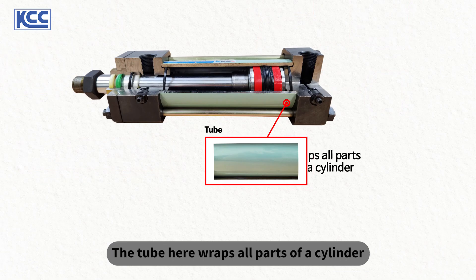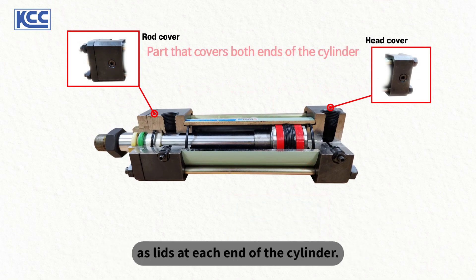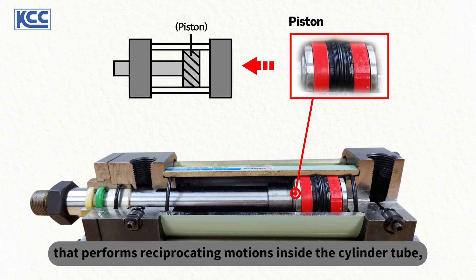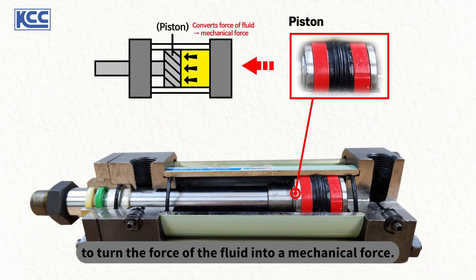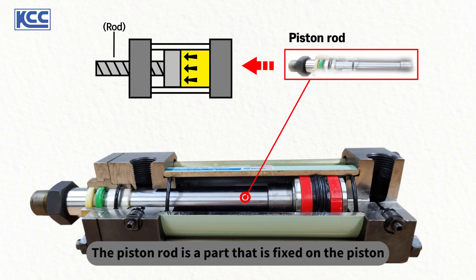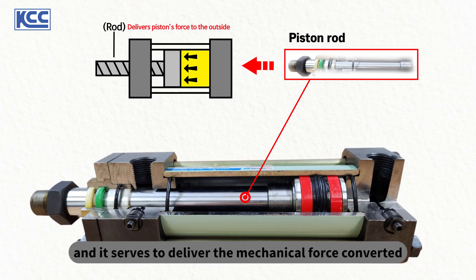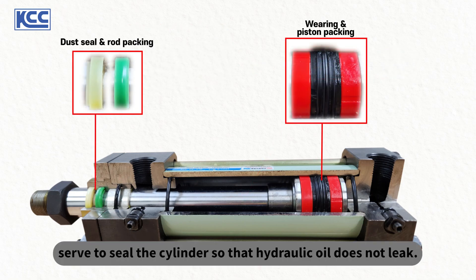The tube wraps all parts of a cylinder and determines the direction of the piston's movement, whereas the head cover and rod cover serve as lids at each end of the cylinder. The piston is a disc-shaped part that performs reciprocating motions inside the cylinder tube, and the high-pressure hydraulic oil pushes this piston to turn the force of the fluid into a mechanical force. The piston rod is a part that is fixed on the piston, and it serves to deliver the mechanical force converted by the piston to the outside.